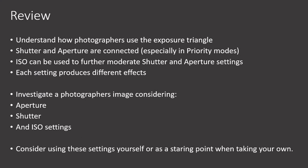To understand how photographers use the exposure triangle: shutter and aperture are connected, especially in the priority modes. ISO can be used to further moderate shutter and aperture settings. Use the aperture and shutter priorities, and if you need to use ISO, keep it set at a small less-sensitive number to begin with, and if need be raise it up through more sensitive numbers — but it might cause the after effect of graininess. Each of the different settings produces their own effects: graininess from ISO, blurred motion from shutter speed, or out-of-focus background through the aperture. So you could now investigate different photographers and look at their images, consider how they've used those three settings, and then think how you yourself can use those as a starting point when you start to take your own images. Good luck.